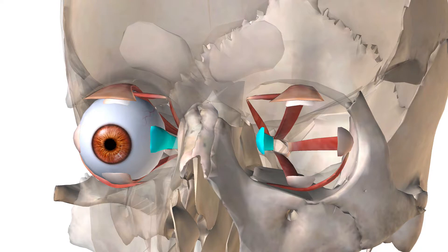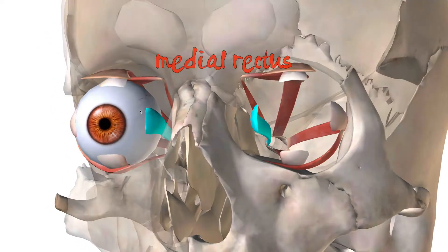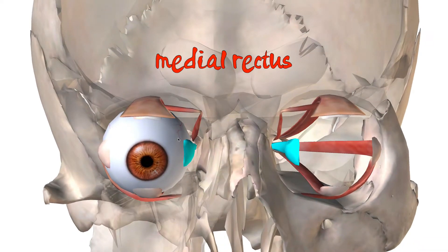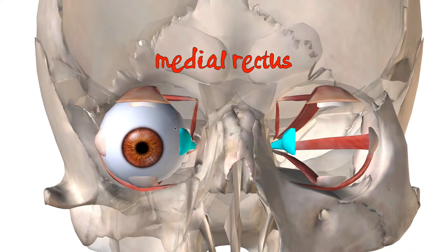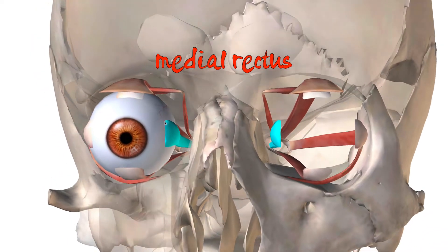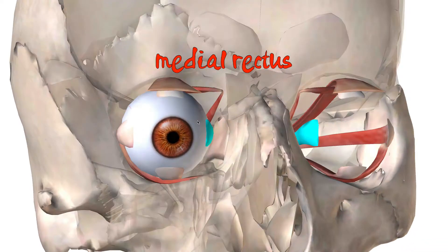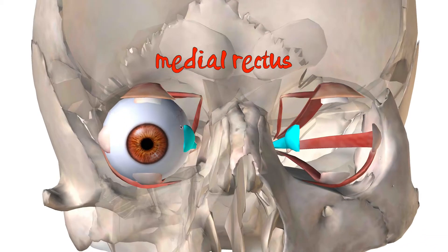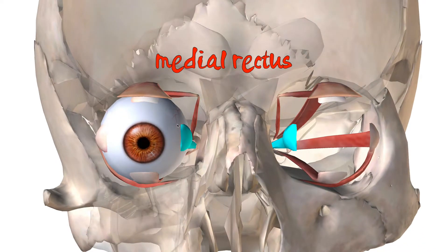With the lateral rectus and medial rectus — you can go cross-eyed. If both medial recti are engaged, then you can look cross-eyed, which puts your gaze medially toward the middle.